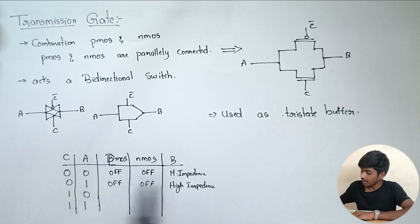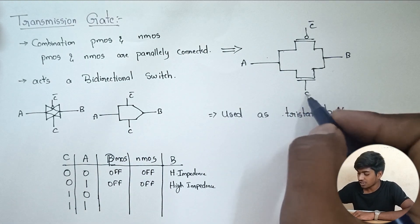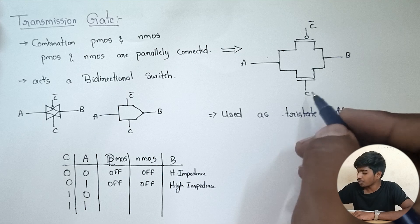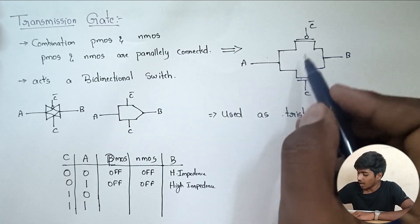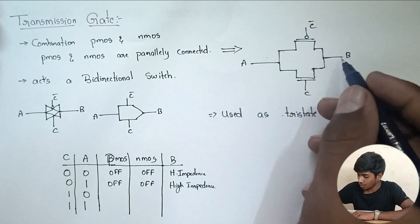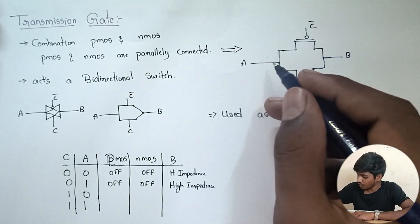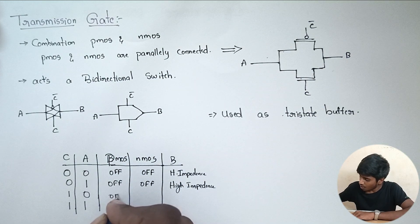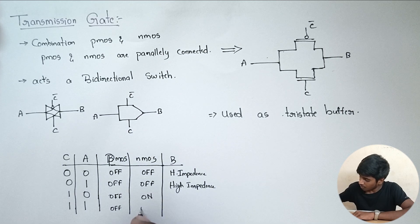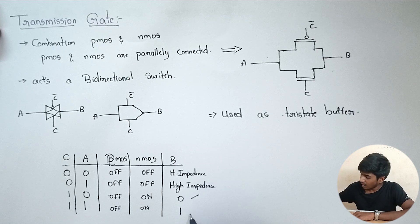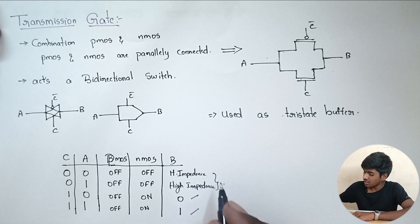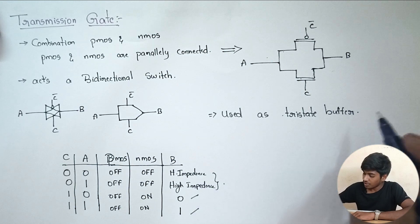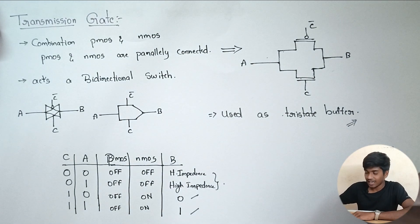When the control signal is 1, the NMOS will be in on state and PMOS will be in off state, so output will be equal to A. PMOS will be in off state, NMOS will be in on state. So we are having off state, on state, and high impedance — these are the 3 output conditions. Transmission gate is used as a tri-state buffer.